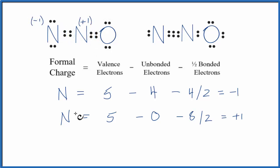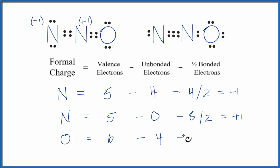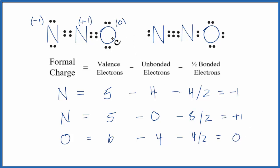Finally, let's do the oxygen. Oxygen is group 16, 6A on the periodic table, so it has six valence electrons. The unbonded electrons: we have four of those. Then we subtract the bonded electrons — four of those — divided by two gives two. Six minus four is two, minus two is zero. So the formal charge on this oxygen is zero.